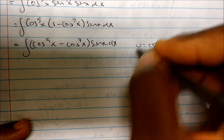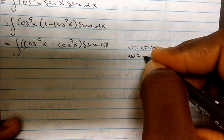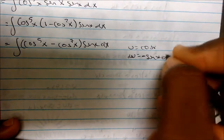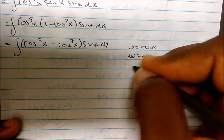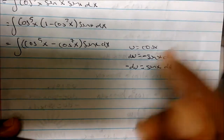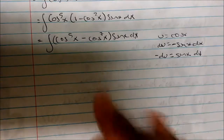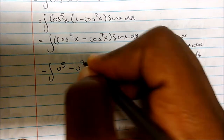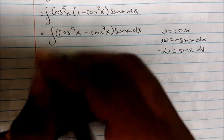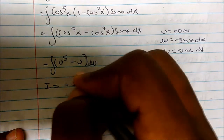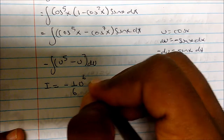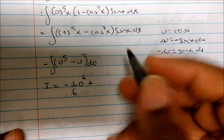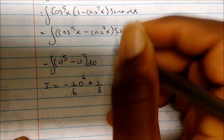Now I'm able to use u-substitution. If I set u to be cosine of x, then my derivative is negative sine of x dx. We don't have a negative sine, we have a positive sine, so negative du equals sine of x dx — I just divided by a negative. Rewriting the integral, this becomes negative times the quantity u to the fifth minus u to the seventh, du. Taking the integral, this becomes negative one-sixth u to the sixth. We distribute the negative, so negative times negative is positive, giving plus one-eighth u to the eighth plus C.